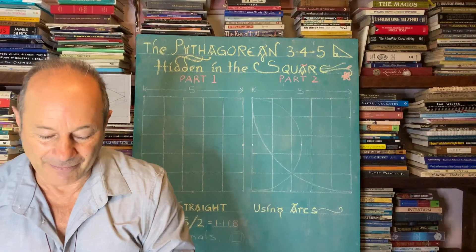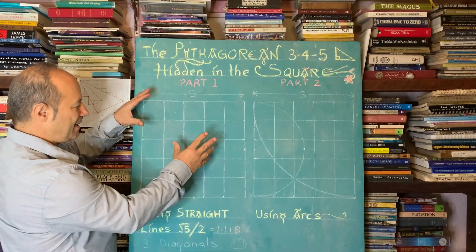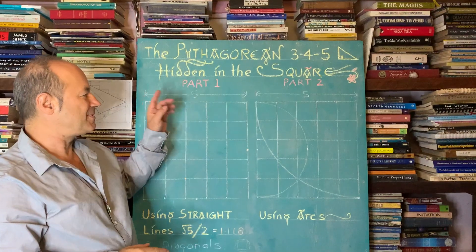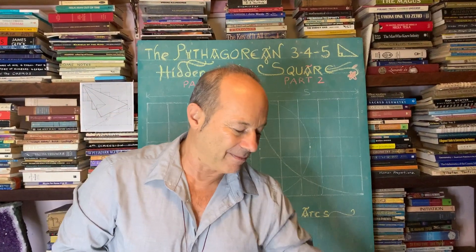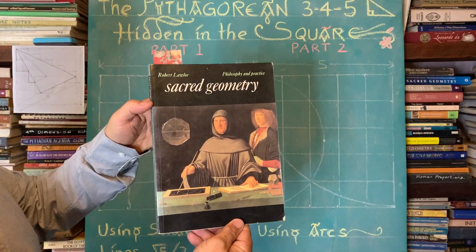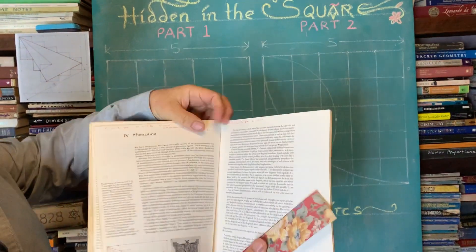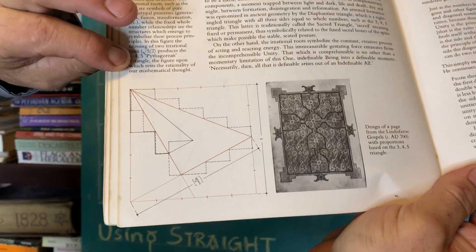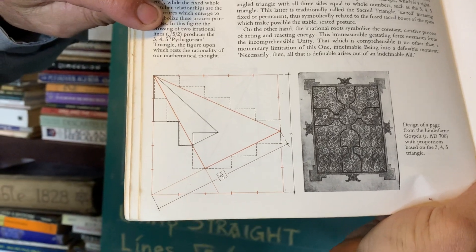Today there are three parts. Part one is the Pythagorean triangle hidden in the square. Here's a square divided into five units — a tribute to great mathematicians before us. My colleague Robert Lawler, who wrote Sacred Geometry, first wrote about this in the 1980s. His diagram also appears on the cover of a gospel from Lindisfarne, where the 3-4-5 triangle was used for design.